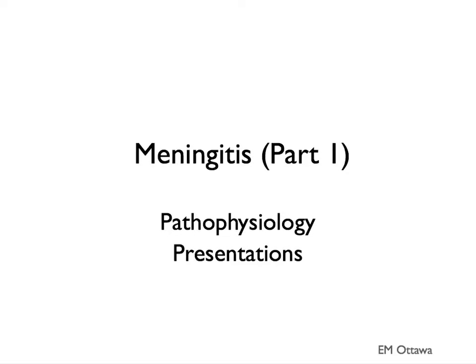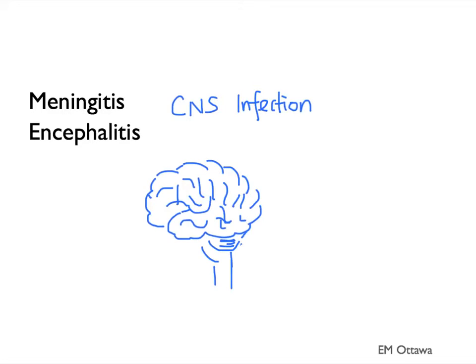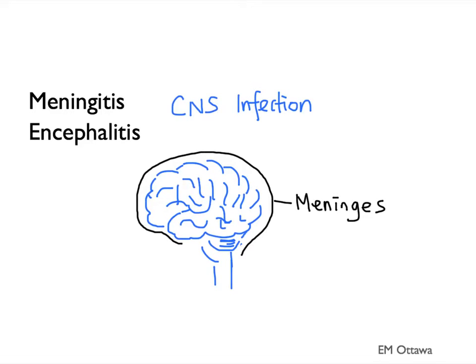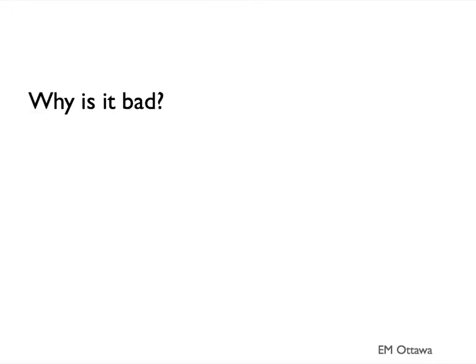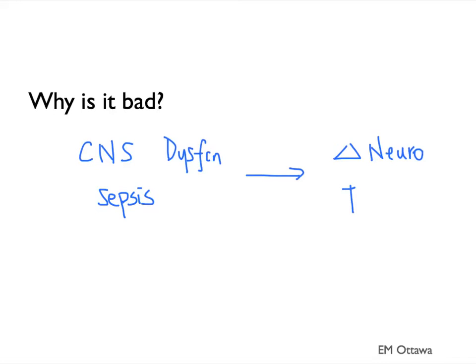Welcome to Meningitis Part 1. In this section, we'll discuss the pathophysiology and presentations of meningitis and encephalitis. Meningitis and encephalitis are infections of the central nervous system. If left untreated, they cause significant CNS dysfunction and sepsis, leading to lifelong neurological disabilities and even death. Therefore, they are both must-not-miss diagnoses in the emergency department.